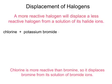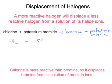Chlorine plus potassium bromide will make bromine plus potassium chloride. Chlorine is Cl₂ and potassium bromide is KBr. That gives us bromine, which is Br₂, and potassium chloride. In order to balance that, we put a 2 in front of KBr and KCl. Chlorine is more reactive than bromine, so it displaces bromine from its solution of bromide ions.